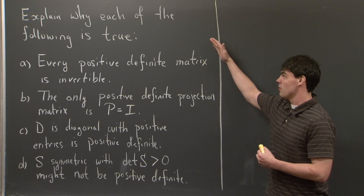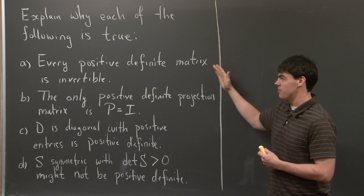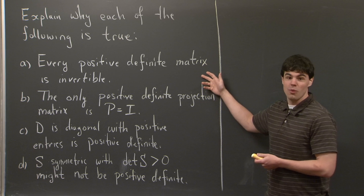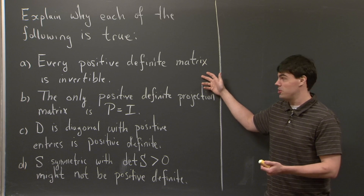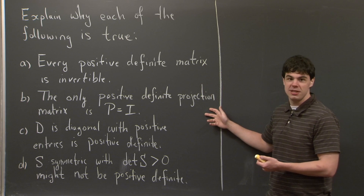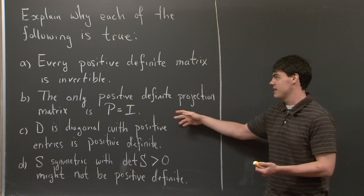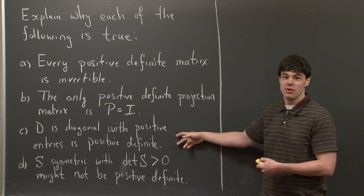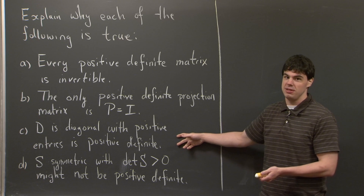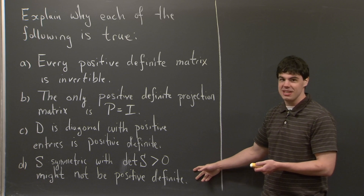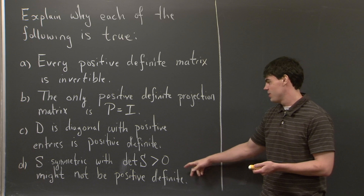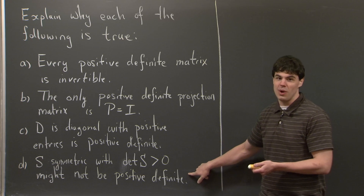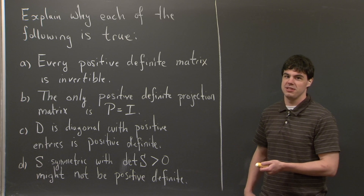We're going to look at why each one of the following statements is true. First, why every positive definite matrix is invertible. Second, why the only positive definite projection matrix is the identity matrix. Third, if D is a diagonal matrix with positive entries, show that it must also be positive definite. And lastly, if S is a symmetric matrix where the determinant of S is bigger than 0, show why this might not necessarily imply that it's positive definite.